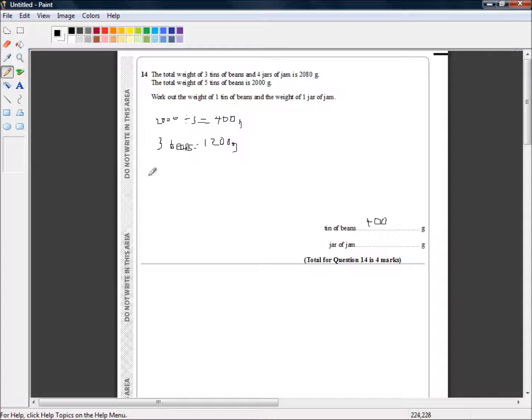So four jars of jam on their own, I'm just going to write jam, is equal to 2080 minus 1200. You can use a calculator, but that's just 880. 12 from 20 is 8, so 800, and the 80 makes 880. Okay, so we know that four jars of jam is 880 grams.